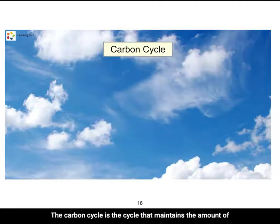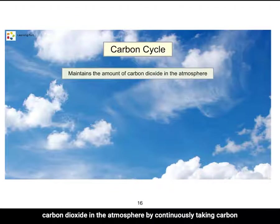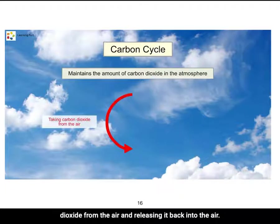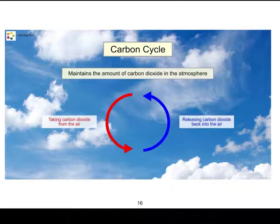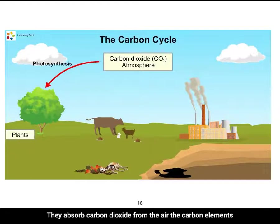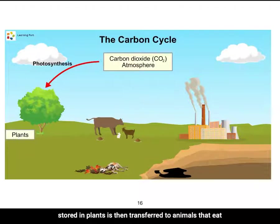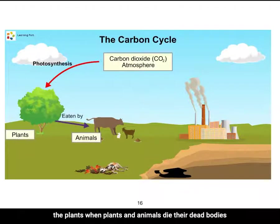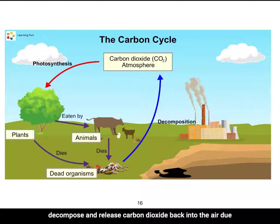The carbon cycle maintains the amount of carbon dioxide in the atmosphere by continuously taking carbon dioxide from the air and releasing it back. When green plants undergo photosynthesis to make food, they absorb carbon dioxide from the air. The carbon stored in plants is then transferred to animals that eat the plants.